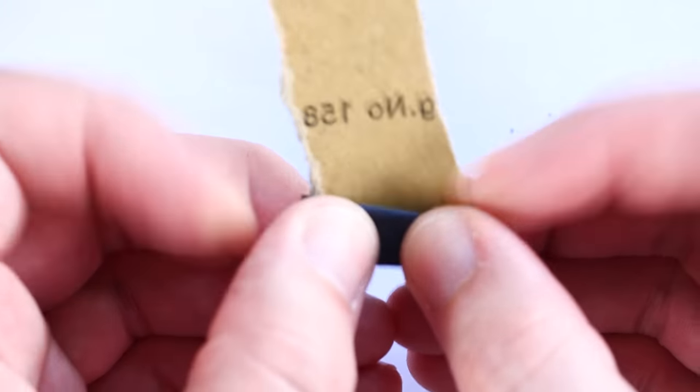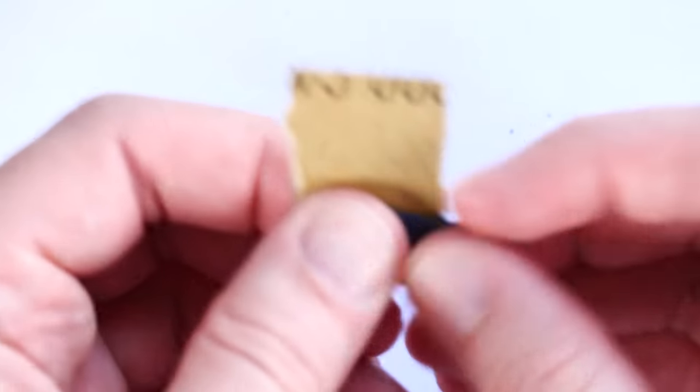One trick that I've found when sanding this way is it really helps to roll up your sandpaper like I'm doing here, as it gives you far more control than trying to use a single piece of thin paper.